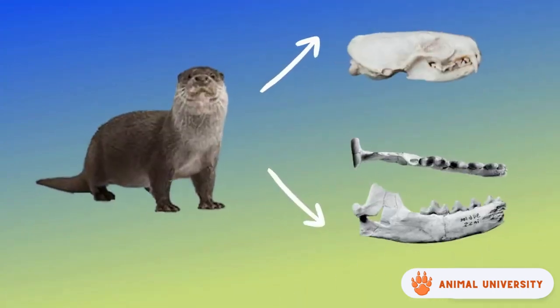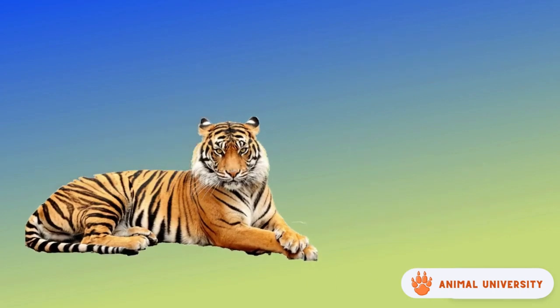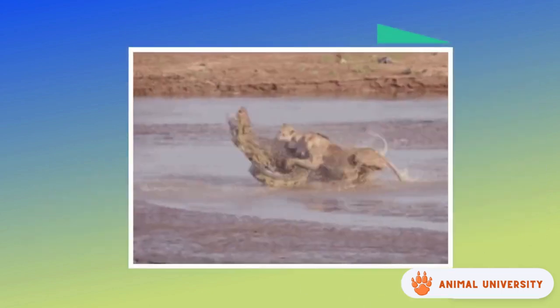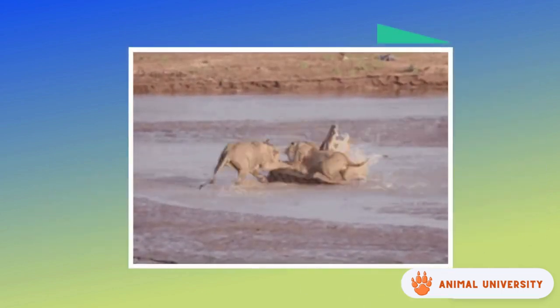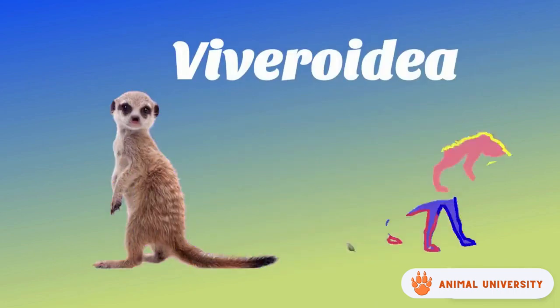Canids are the most popular carnivores which includes your pet dog. They also hunt in packs. Felidae, which includes cats, have retractable claws used for gripping when attacking prey. Lastly, Herpestidae includes mongooses and hyenas.